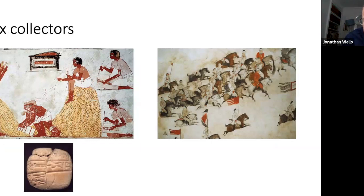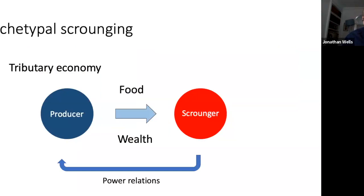With the origins of agriculture came a shift to grain agriculture, because grain was easy to collect as taxation. Early writing — seen on tablets from Mesopotamia — was largely records of grain harvests and taxation. Alongside formal taxation there were informal forms, such as nomadic horsemen riding in to take food from sedentary farmers. This is archetypal scrounging: a tributary economy where producers generate food and wealth that passes to scroungers, who use their wealth and power to maintain the hierarchy coercing unequal production.